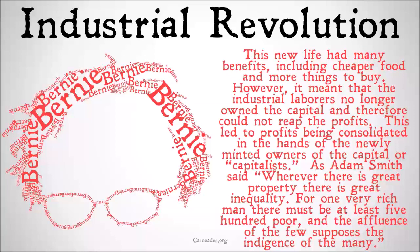However, it meant that the industrial laborers no longer owned the capital, and therefore could not reap the profits. In an agrarian society where a family collectively owns the farm and all people in that family are needed to work it, you have as much labor as you have capital in the hands of individuals. But when you have a factory, you usually only need one person to own it, but a lot of people to work in it. This led to profits being consolidated in the hands of the newly minted owners of the capital, or capitalists.